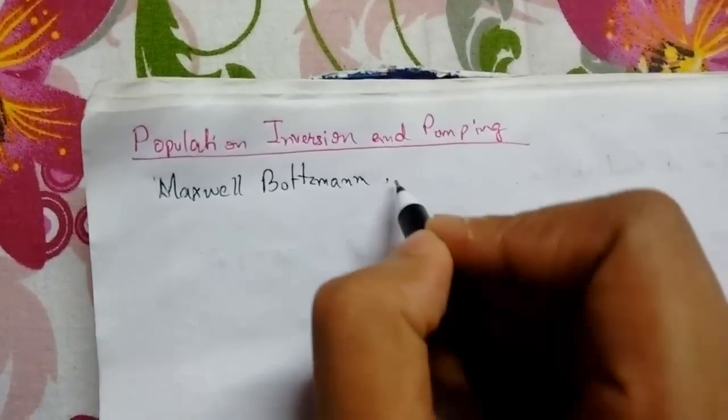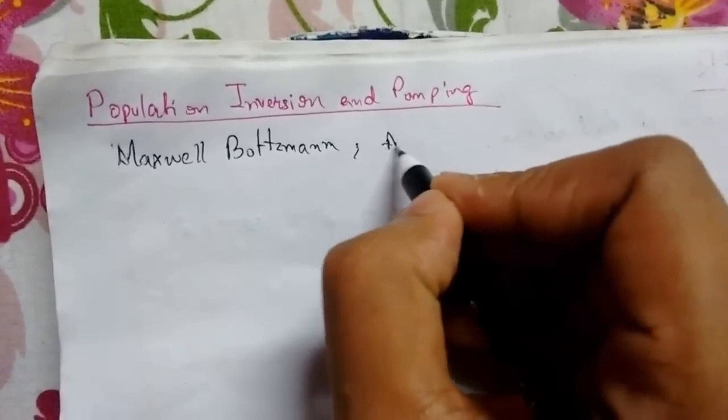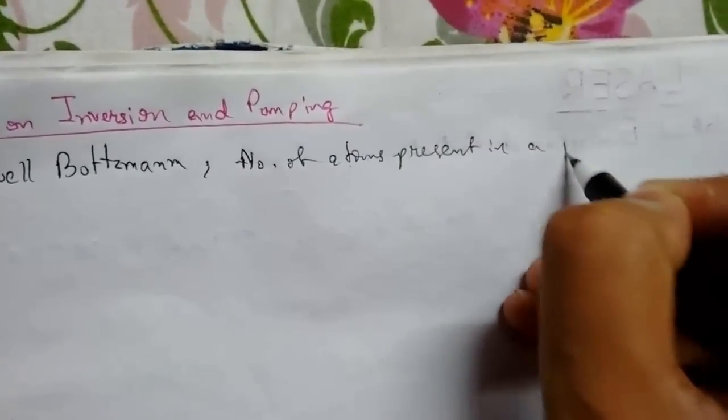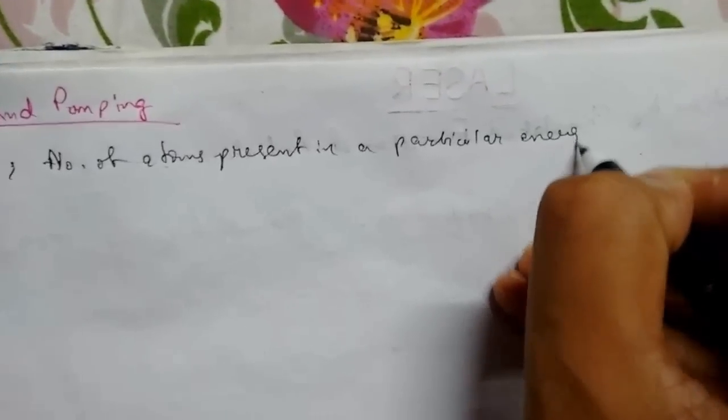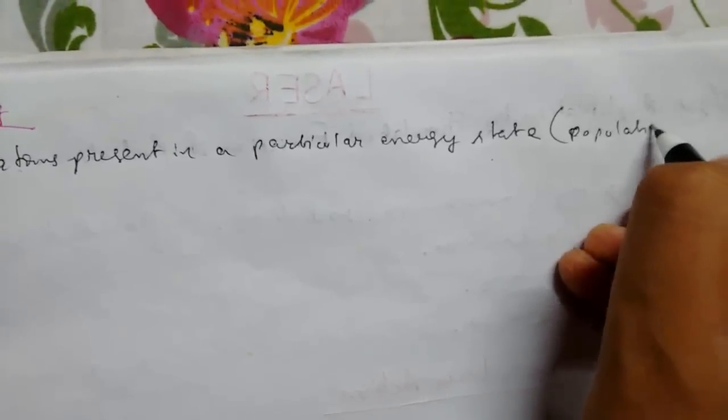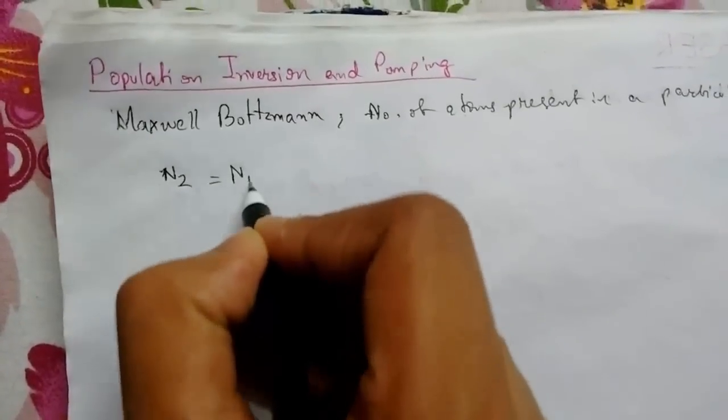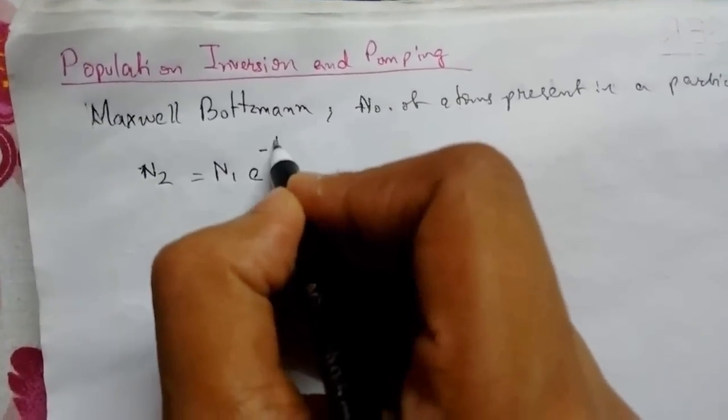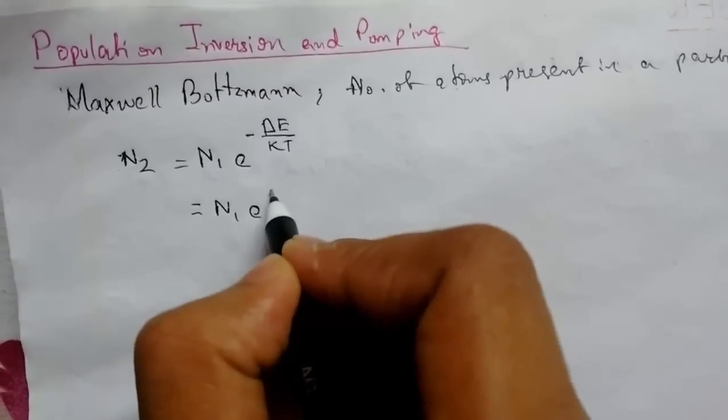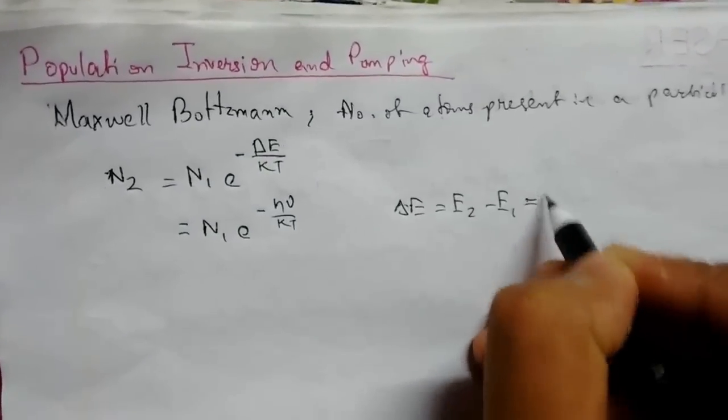The law states that the number of atoms present in a particular energy state, called population, is given at any time by the expression N2 = N1 × e^(-ΔE/kT). We can also write this as N1 × e^(-hν/kT), where ΔE = E2 - E1 = hν.